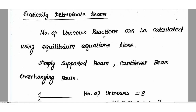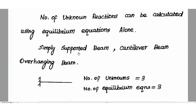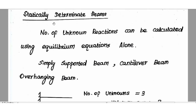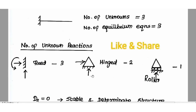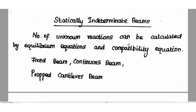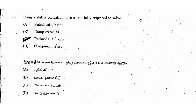Statically determinate structures — such as simply supported beams, cantilever beams, and overhang beams — have unknown reactions equal to or fewer than the equilibrium equations. For statically indeterminate beams such as fixed beams and continuous beams, the unknown reactions are solved using both equilibrium equations and compatibility conditions. The right answer is redundant structures — compatibility conditions are essentially required to solve redundant frames.